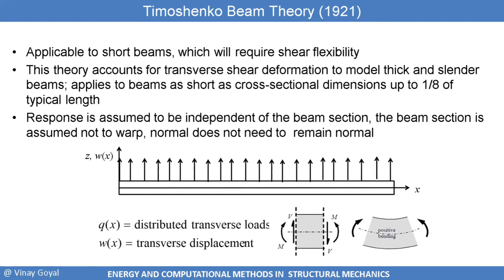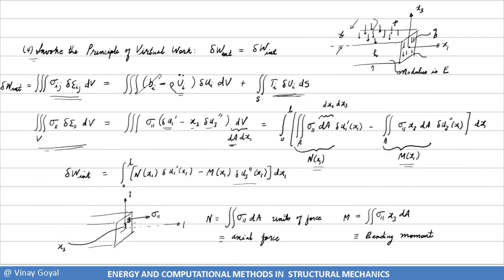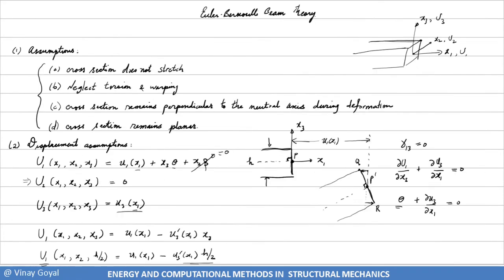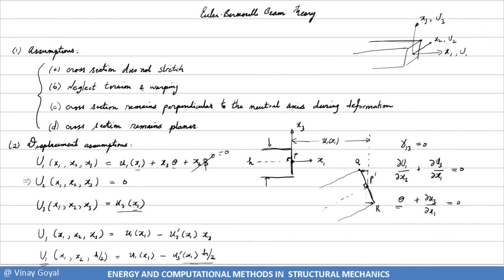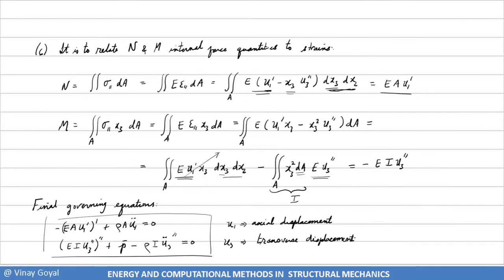In today's lecture, I want to discuss Timoshenko theory. In that theory, we assume that the cross section does not need to remain perpendicular to the neutral axis — it can actually rotate about the neutral axis, so theta is no longer constrained to equal negative U3_prime. Here, gamma_13 does not have to be zero. Timoshenko theory works very well for short beams, which require shear flexibility, and accounts for transverse shear deformation.